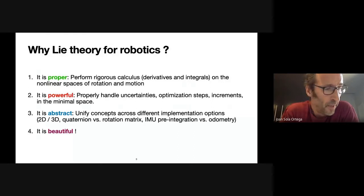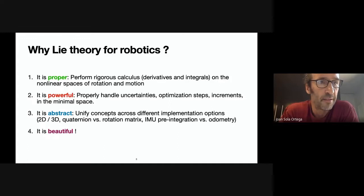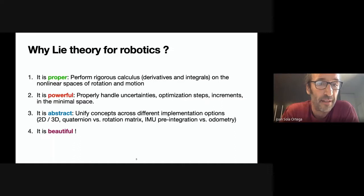It is powerful — it means we can handle uncertainties or small increments, optimization steps, all these kinds of things we use in estimation, optimization, or even control to modify our variables. Imagine a variable is a rotation matrix in 3D — that's nine numbers, and you have to modify it in some direction. You cannot just modify randomly these nine numbers because only three degrees of freedom are allowed — there are six constraints. Lie theory is there to make it proper.